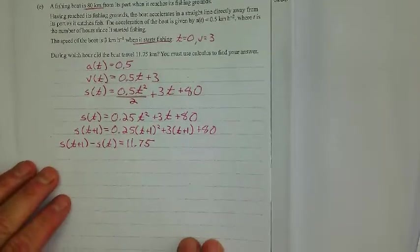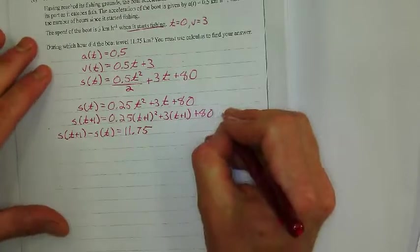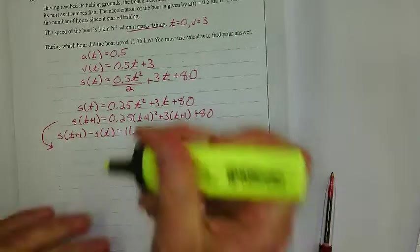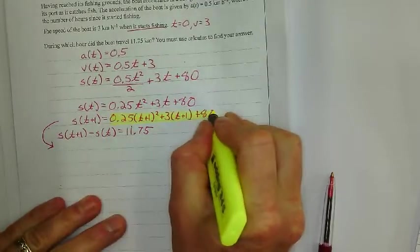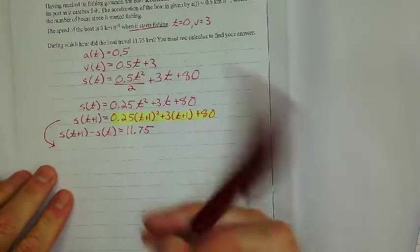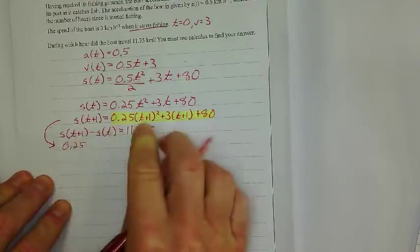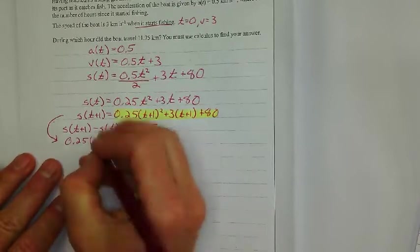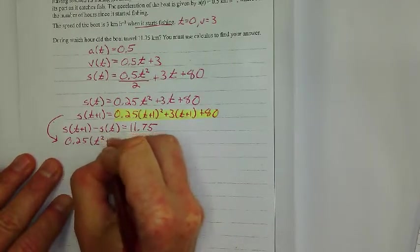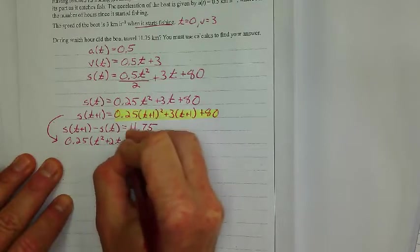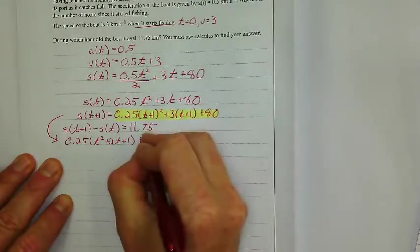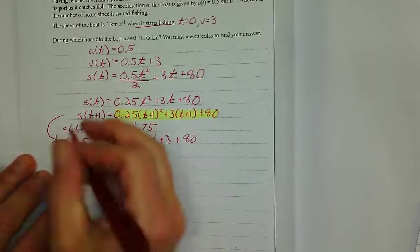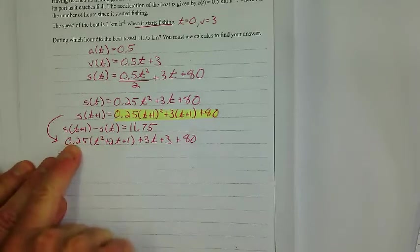So first up, I'm just going to clean this up a bit. Just this part of the equation. I'm going to clean up. And I get 0.25. I'm going to expand those brackets in there. And I'm going to do it in one step. I'm going to say it's t squared plus 2t plus 1. Then plus, and I'll expand that through, 3t plus 3. And then that plus 80 at the end.